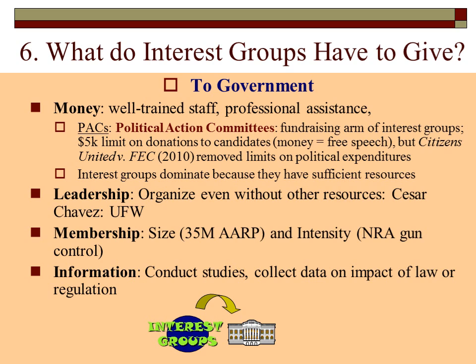Interest groups also have information to give. They conduct studies and collect data on the impact of laws and regulations — they're really doing all the homework. Elected officials don't have time to read in-depth studies comparing data across states about how a problem could be solved, but interest groups have the time and money to do that and can provide concise information officials can use to help make their decisions.